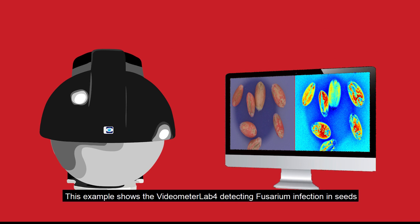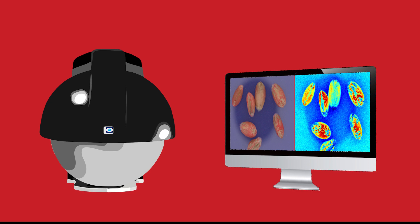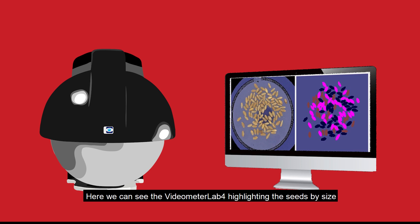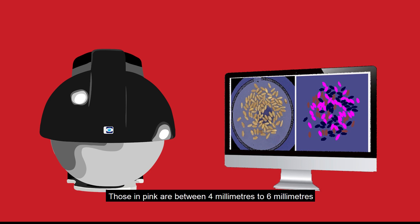This example shows the Videometer Lab 4 detecting fusarium infection in seeds. Here we can see the Videometer Lab 4 highlighting the seeds by size. The seeds highlighted in maroon are between 2 to 4 mm in size, those in pink are between 4 mm to 6 mm, and any seeds above 6 mm in size are highlighted in navy blue.